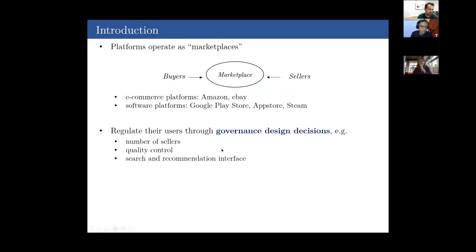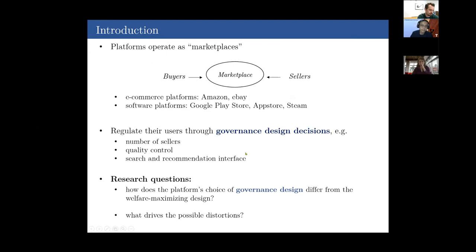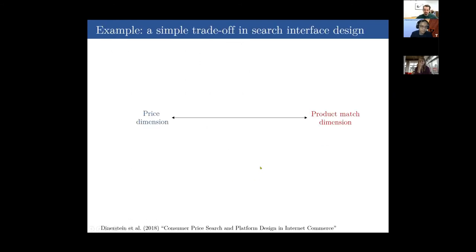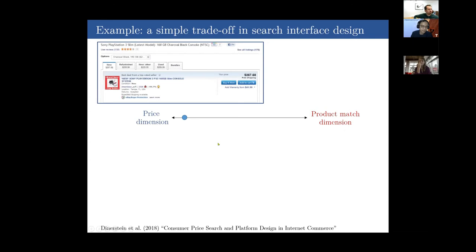Examples of governance decisions include: number of sellers, level of quality control, design of search and recommendation interfaces. The important research questions are: how does the platform's choice of governance design differ from the welfare-maximizing design, and what drives possible distortions? In this paper I develop an analytical framework to explore this. Consider a simple example: a platform chooses whether its search interface emphasizes the price dimension or the product match dimension.